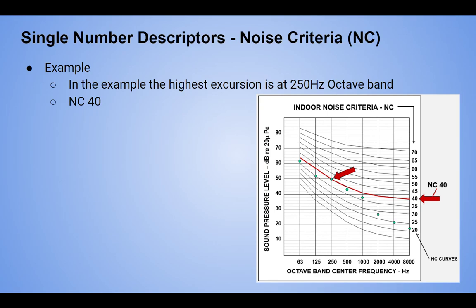The problem is: given that this room is NC 40, we don't know we need to control at 250 Hz — we don't know we need to address something there. It could be that 250 Hz isn't the issue; maybe it's down at 4k, around 38–40 dB. That's the misleading part of an NC value. But it's used everywhere, so it's helpful when starting — you just need to know its limitations.